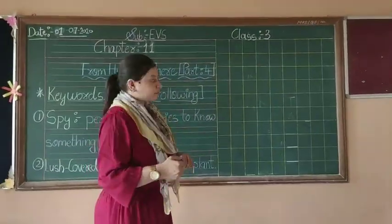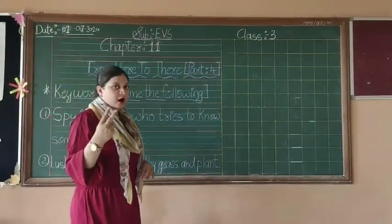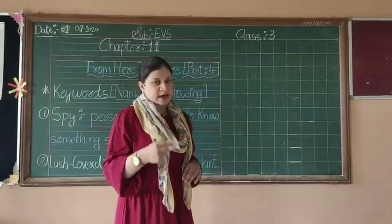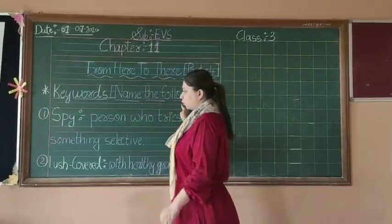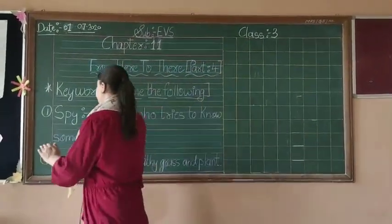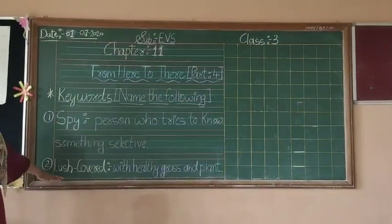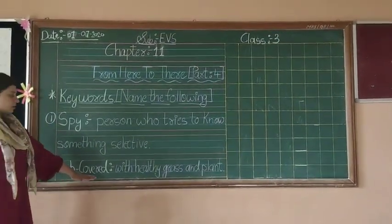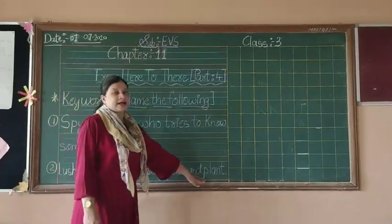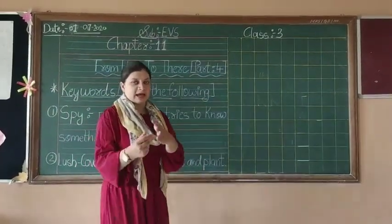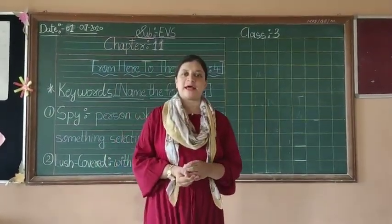In this chapter, we are having only two keywords. How many keywords? Only two keywords. The first one is 'spy' and the second one is 'lush.' These are the two keywords you have to write in your CW notebook.